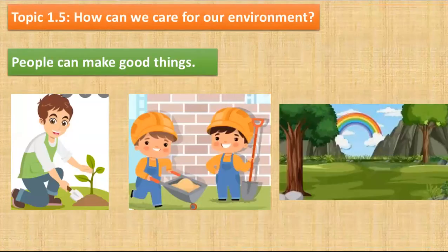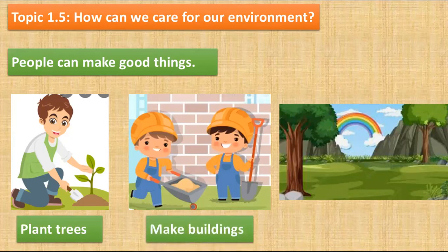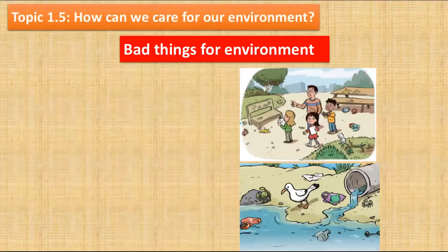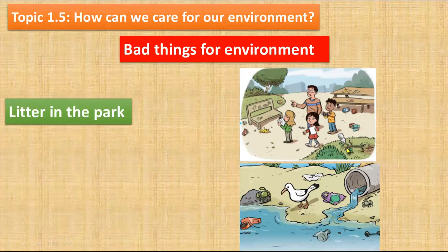We talked about what people can do to make good things for the environment. People can plant new trees — this is good for the environment, and people and animals have good food to eat. People also make buildings to live safely, and people make the forest clean. These are the good things people do for the environment.